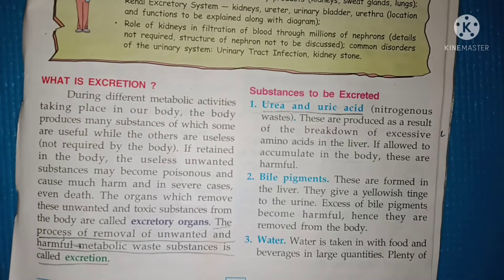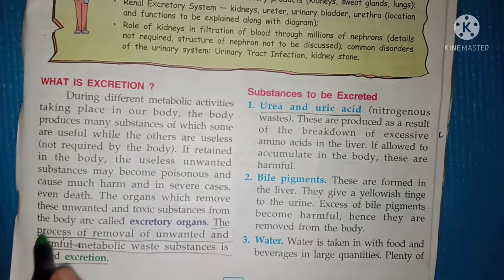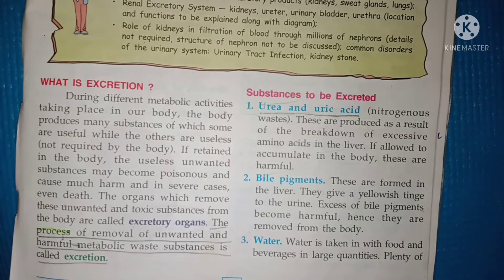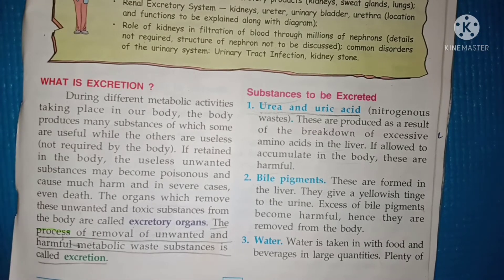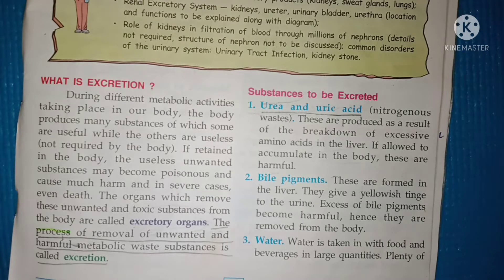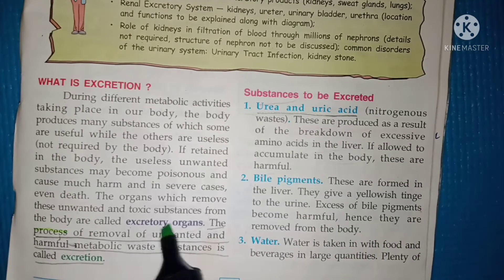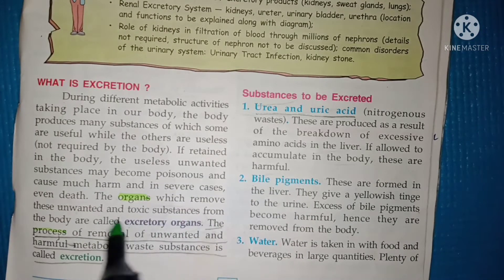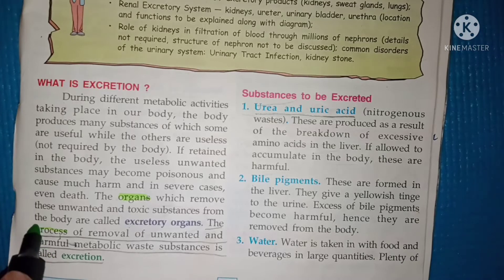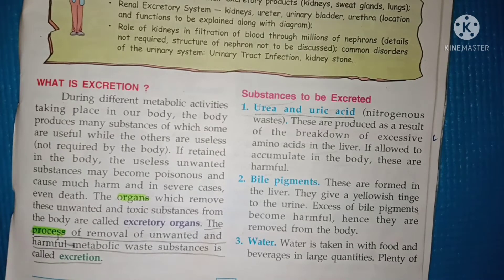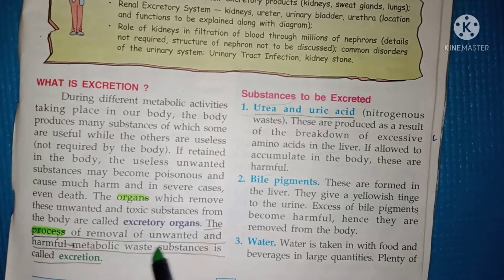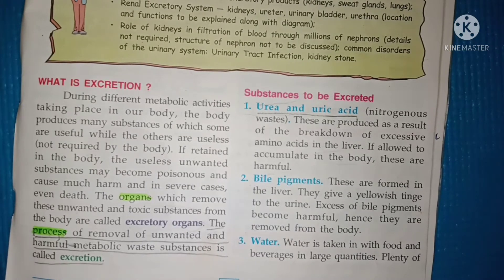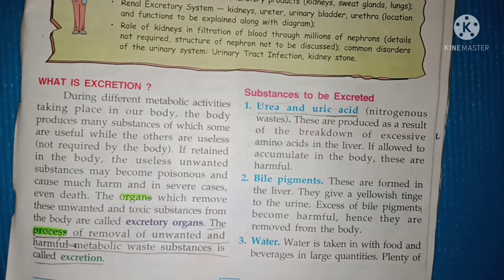Excretory organs are those organs which remove the unwanted or toxic substances. Excretion is a process of removal of unwanted harmful metabolic waste substances from our body. Remember: excretory organ is an organ which removes the unwanted toxic substance, and excretion is the process of removing unwanted and harmful metabolic waste substances. These two terms are interrelated but their definitions have different keywords.